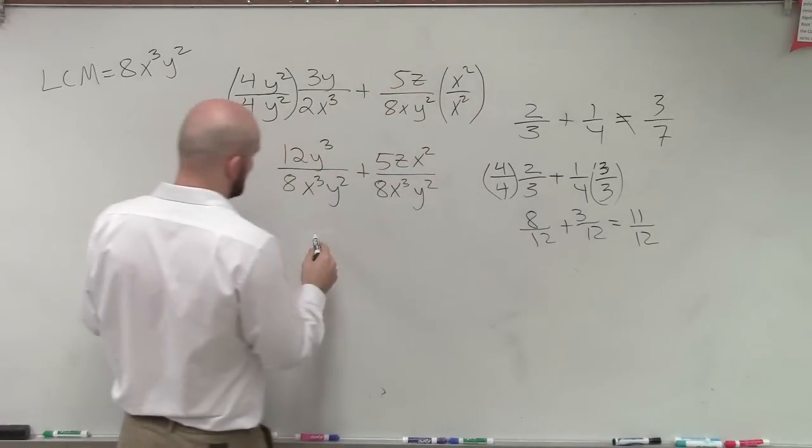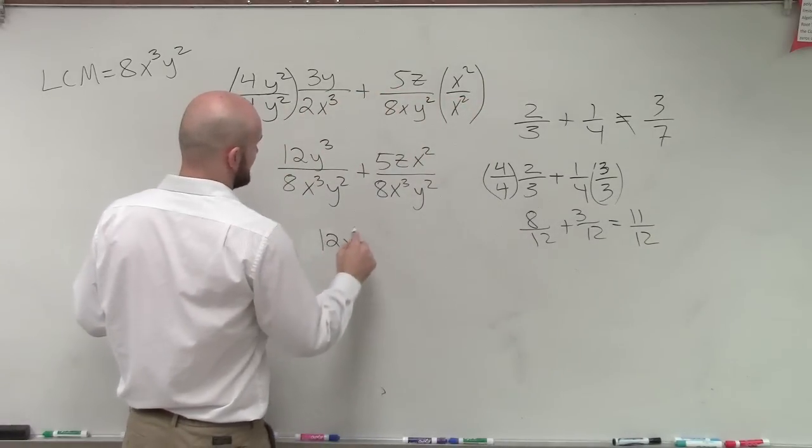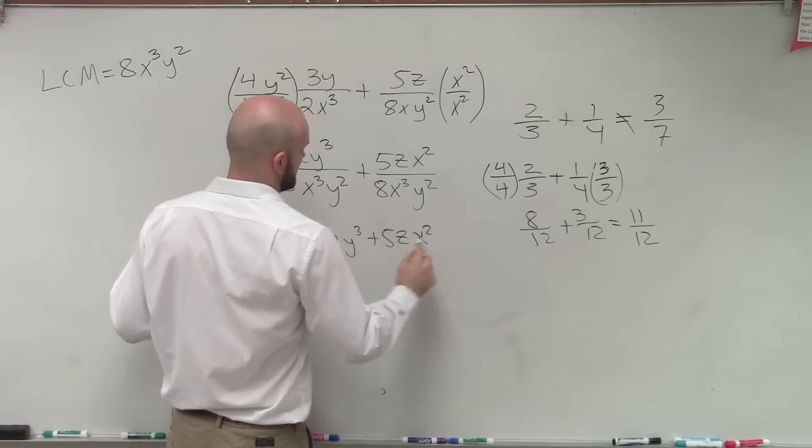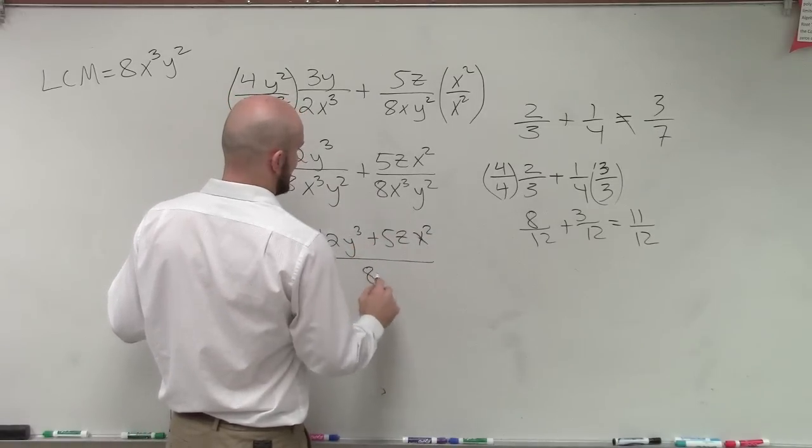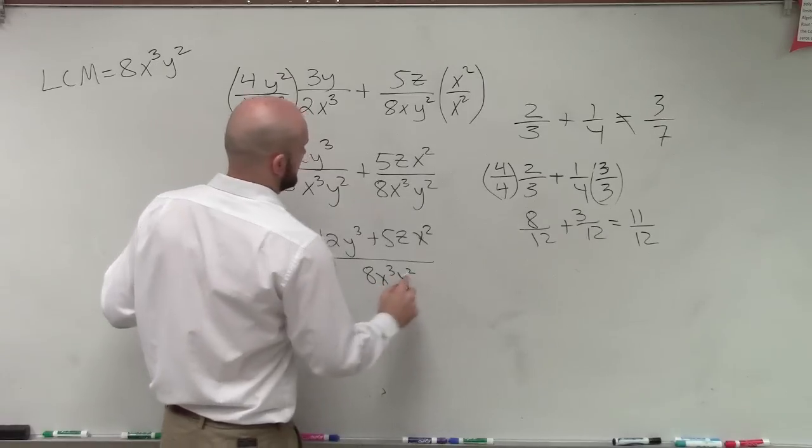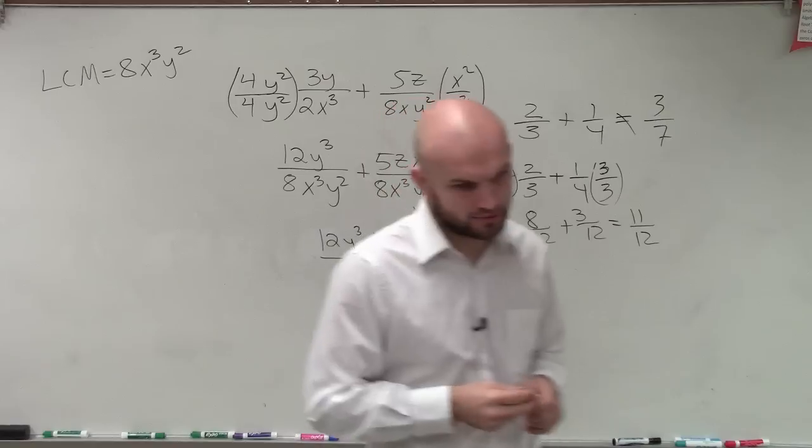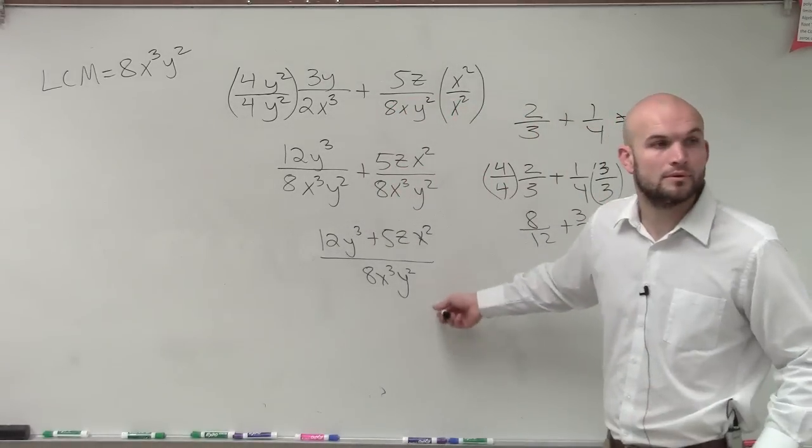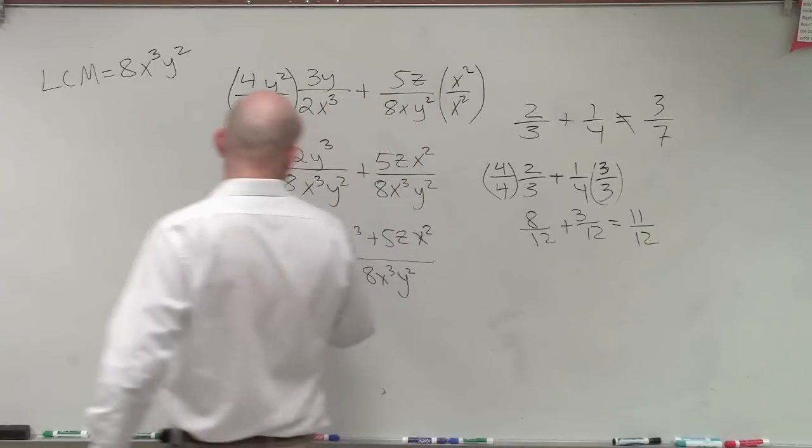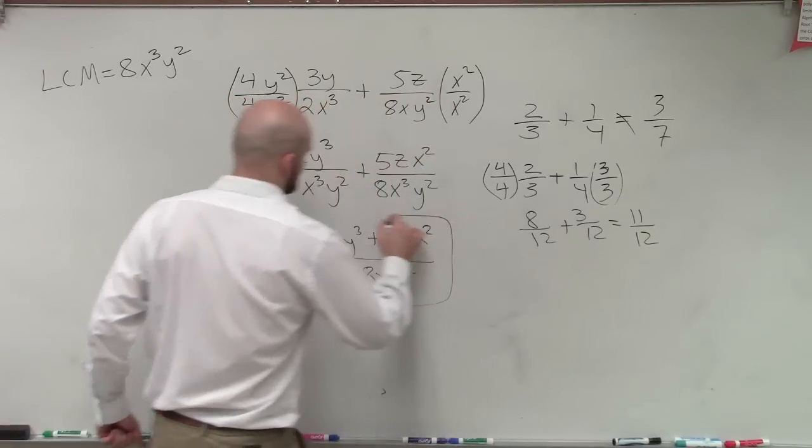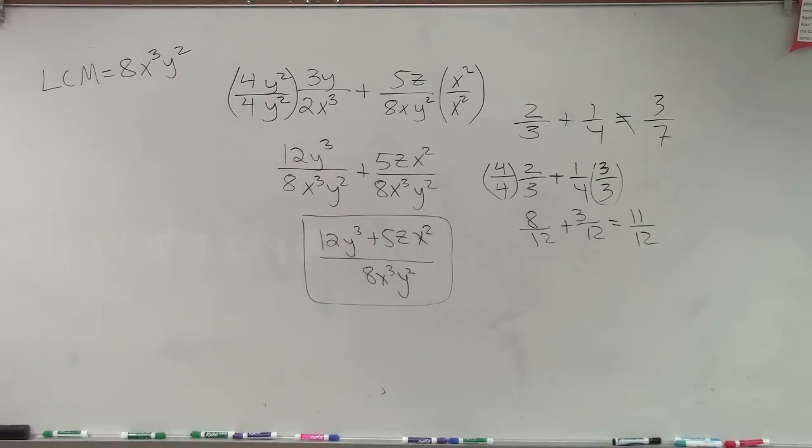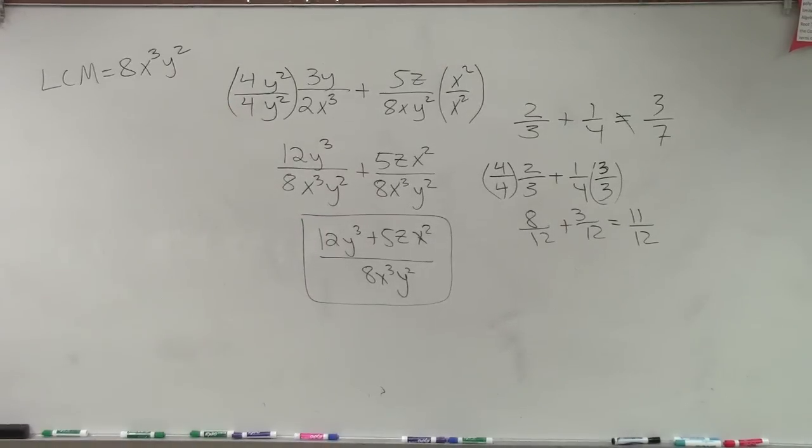So my final answer, I will write as 12Y cubed plus 5ZX squared all divided by 8X cubed Y squared. Alex, you got that? I do got that. Awesome. Done-zo. So, that is what we call...